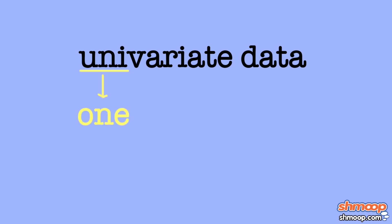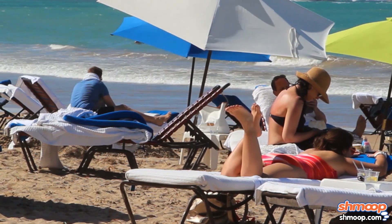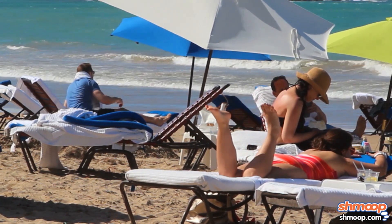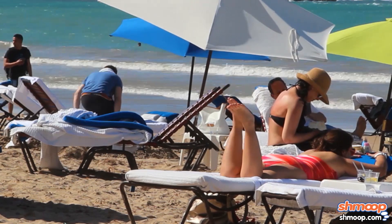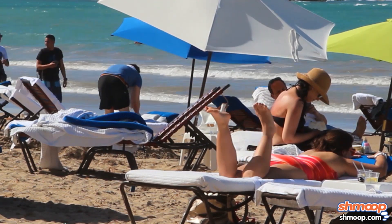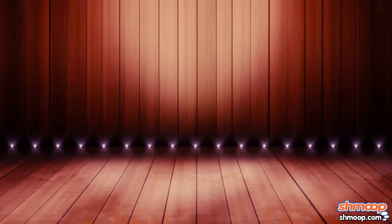Una, as in one, and variate, as in variable. It's a good way of keeping things simple and uncomplicated, so we can examine a single type of data and compare it to other data.